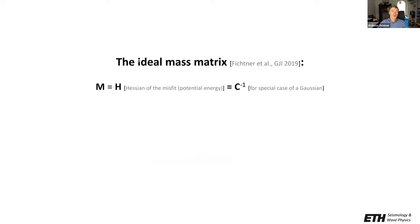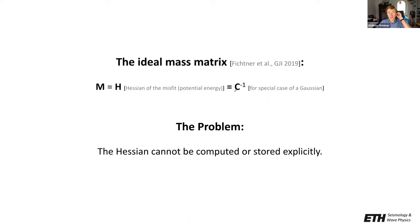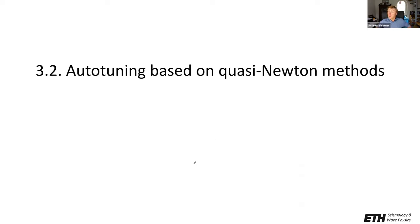One can show that the ideal mass matrix for Hamiltonian Monte Carlo is the Hessian of the potential energy, which equals the inverse posterior covariance matrix in the special case of a Gaussian. The problem is that the Hessian of the misfit functional cannot be computed or stored explicitly — it is simply too expensive to compute and too large to store for all the relevant problems we are interested in.